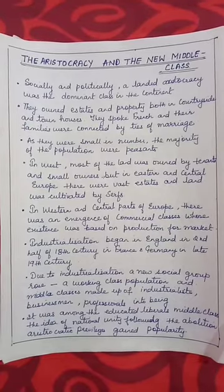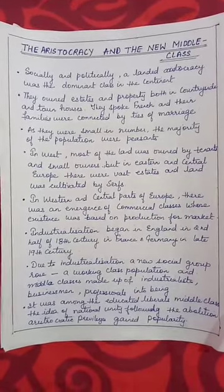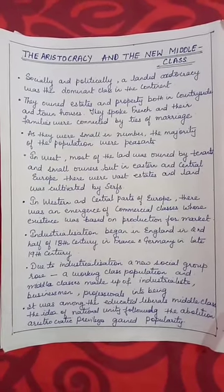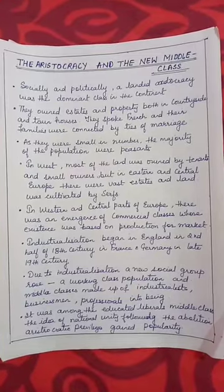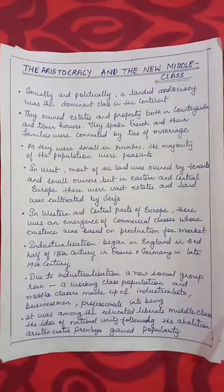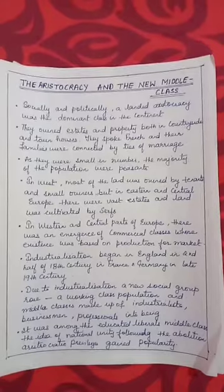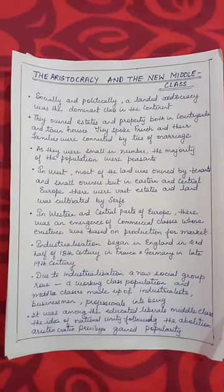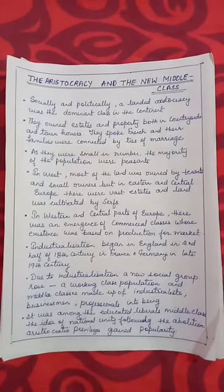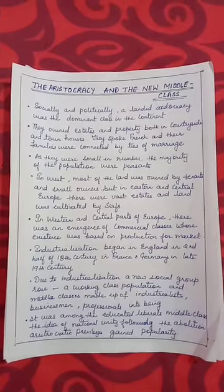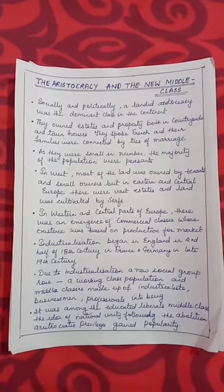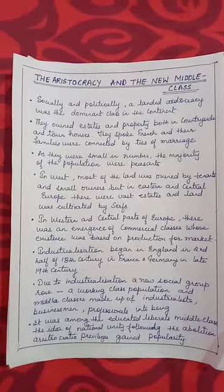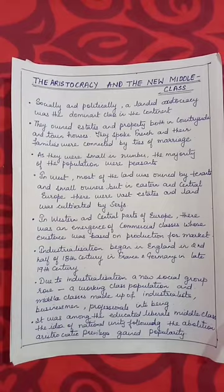Socially and politically, a landed aristocracy was the dominant class on the continent. They owned estates and property both in the countryside and in town houses, and they spoke French. Their families were connected by ties of marriage. As they were small in number, the majority population were peasants. In Western Europe, most of the land was owned by tenants and small owners, but in Eastern and Central Europe there were vast estates cultivated by serfs.